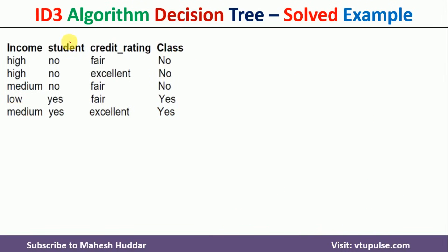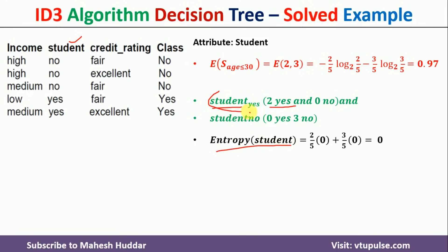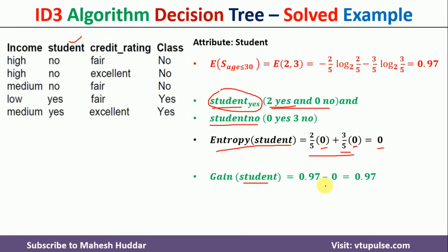For the student attribute in this subset, there are two possibilities: yes and no. When student is yes, there are 2 yes class examples only — entropy is 0. When student is no, there are 3 no class examples only — entropy is 0. So total entropy of student is 2/5 × 0 + 3/5 × 0 = 0. The information gain for student is 0.97 minus 0, which equals 0.97.